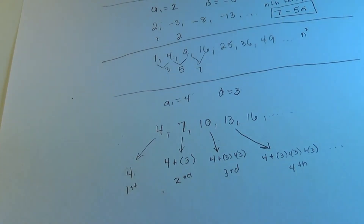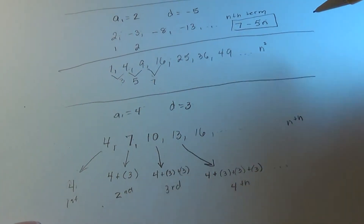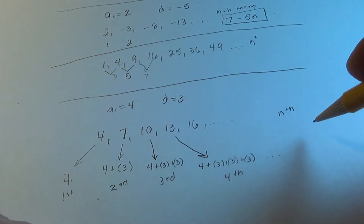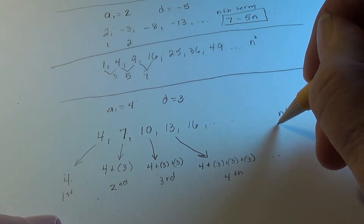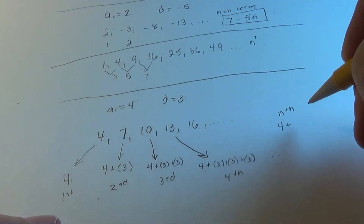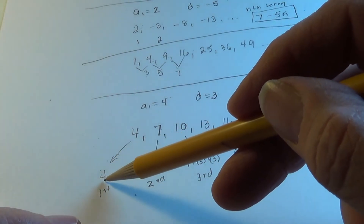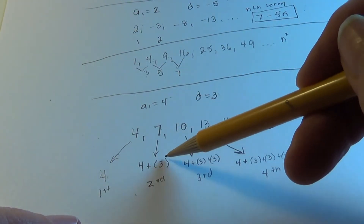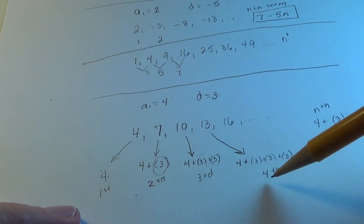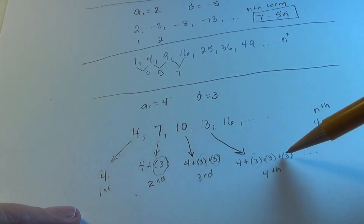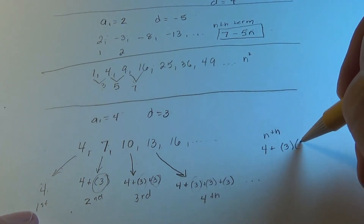Notice the pattern as we get up to the nth term. It's always the first term plus the common difference used a certain number of times. In the first term, the common difference was not used at all. In the second term, it was used once. In the third term, twice. In the fourth term, three times. So on the nth term, we use the common difference n minus 1 times.